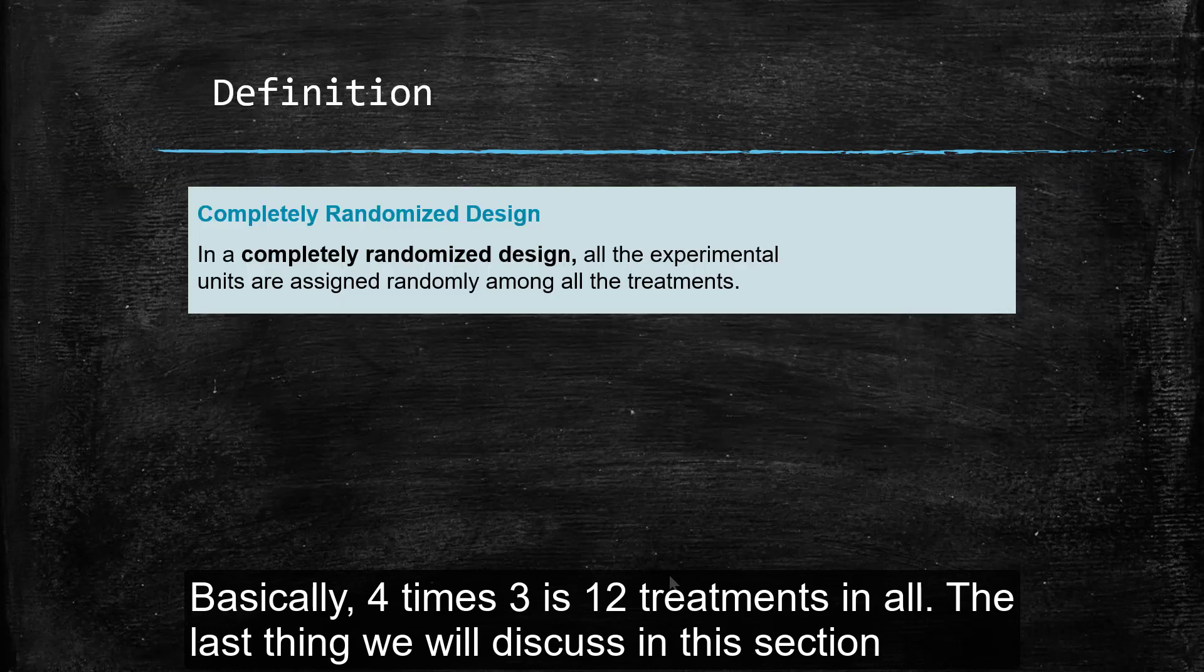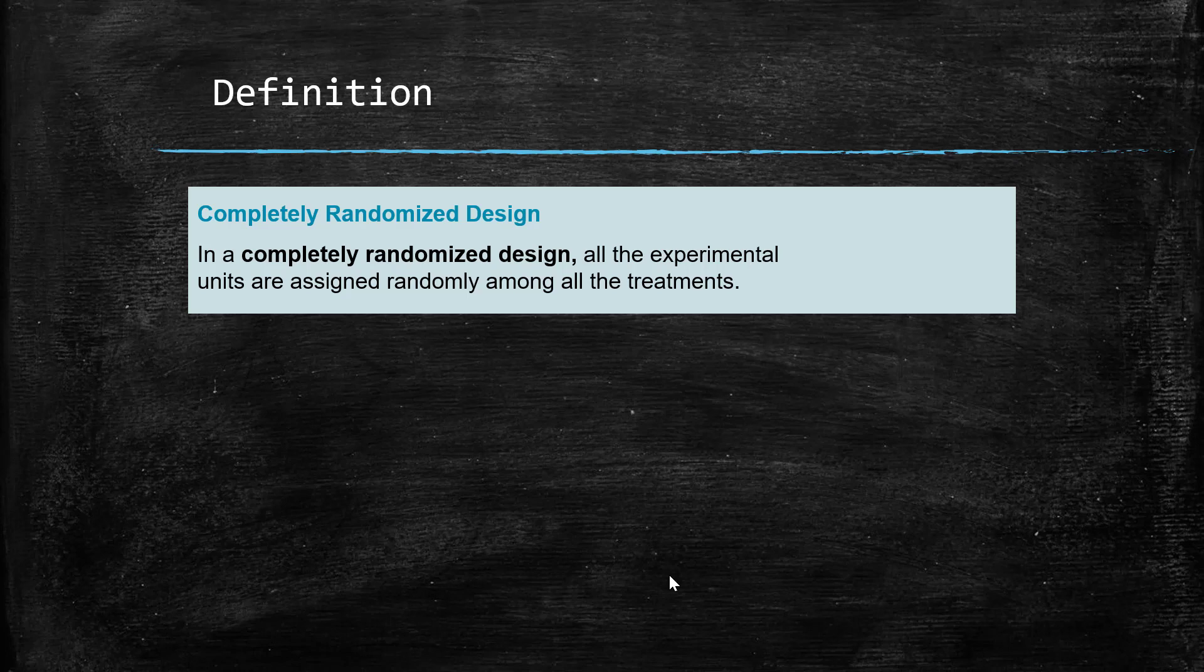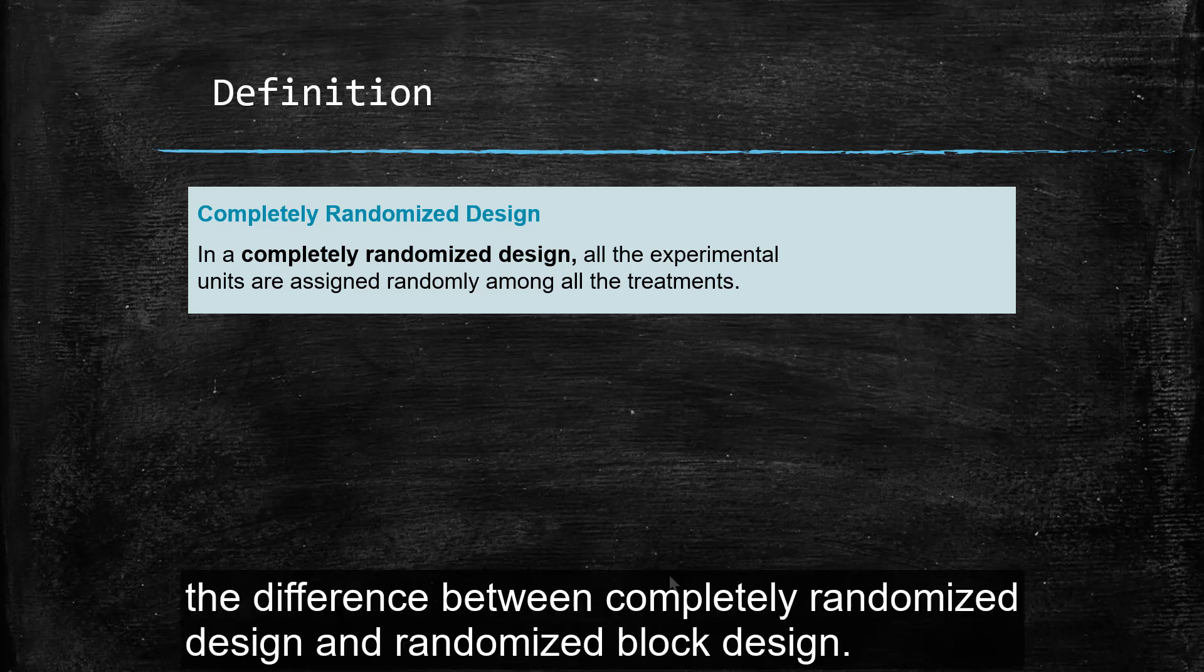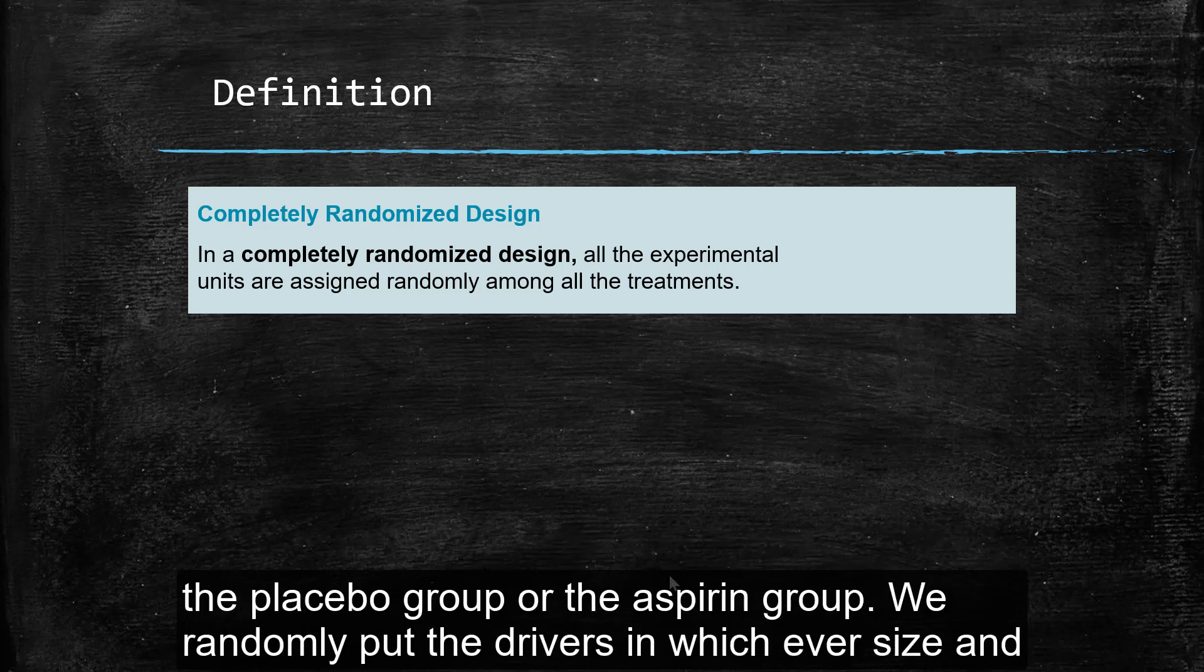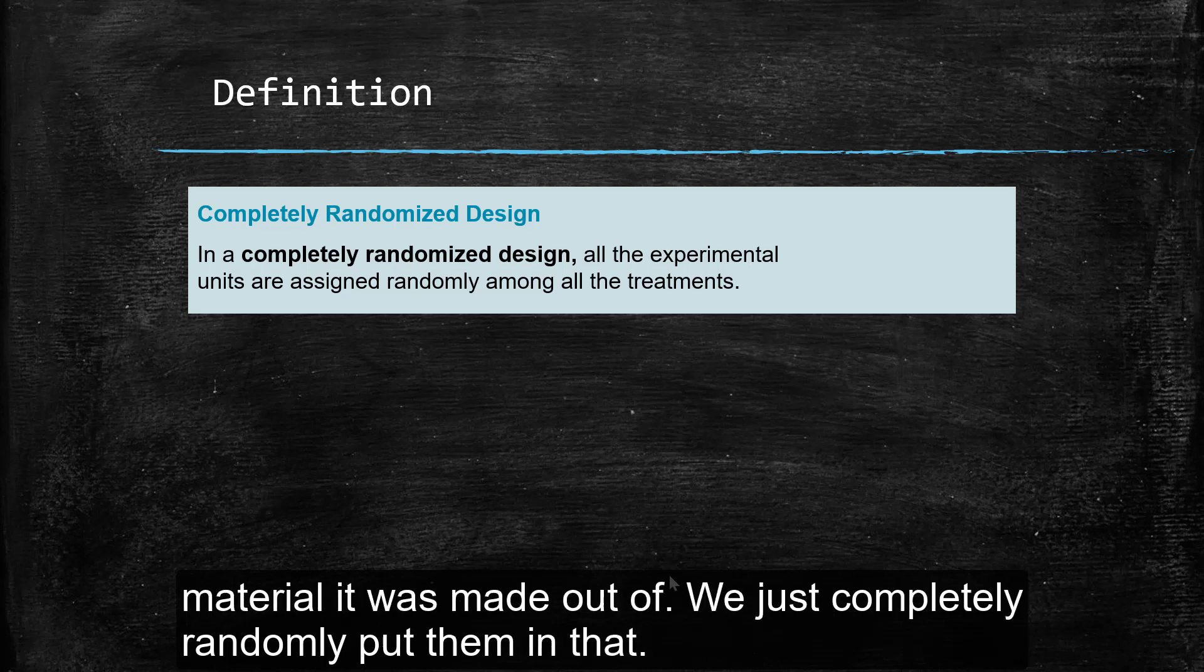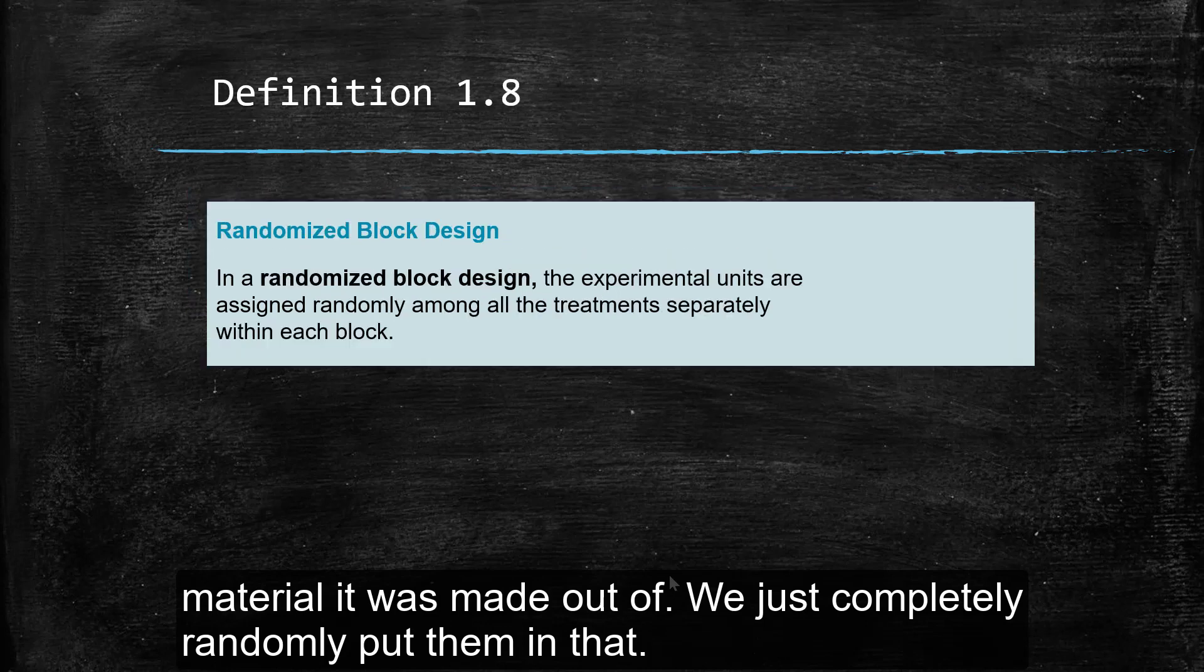The last thing we're going to talk about in this section, just to get rid of all the rest of our vocabulary, is the difference between completely randomized design and randomized block. Now, what we've talked about so far is just completely randomized. We just randomly put the men in either the placebo group or the aspirin group. We've randomly put the drivers in whichever size and whichever material it was made out of. So we just completely randomly put them in that.